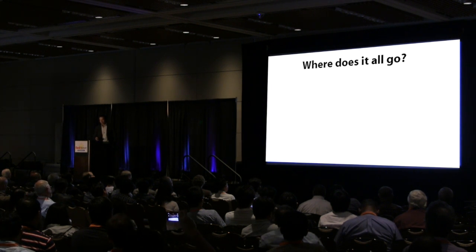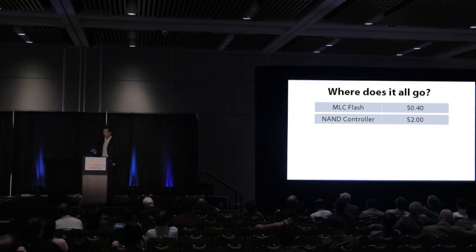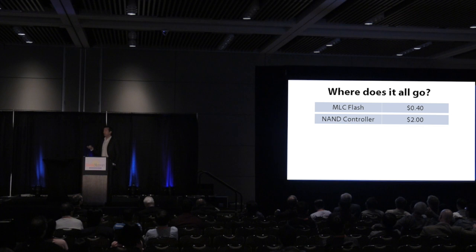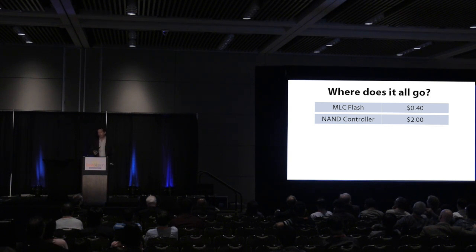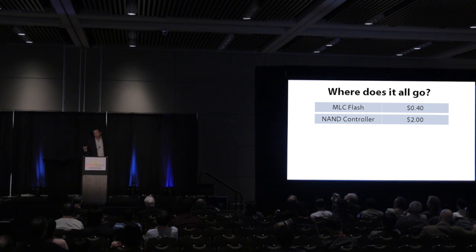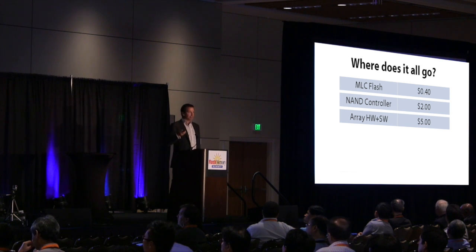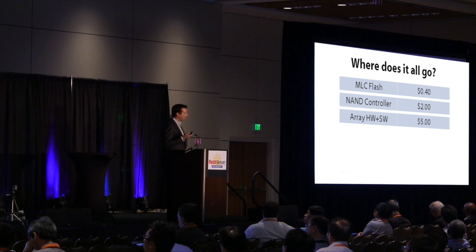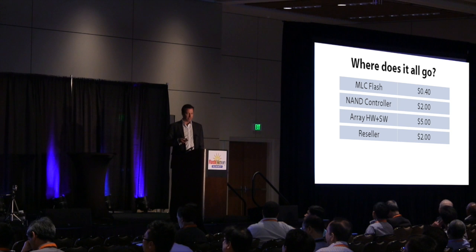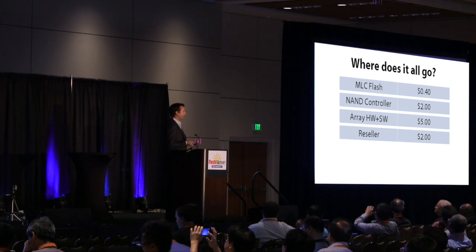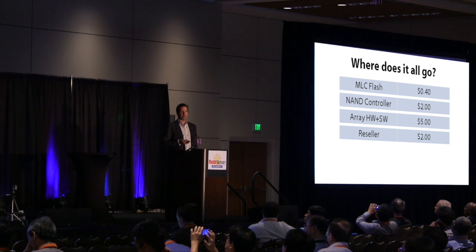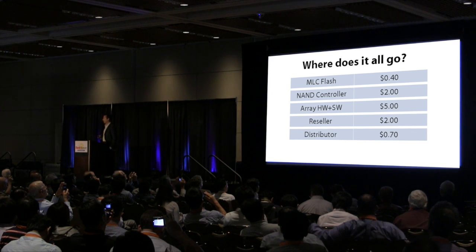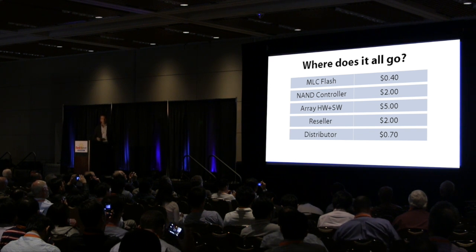Where does it all go? The NAND controller itself is generally commanding about $2 per gigabyte in the cost structure today. A NAND controller that is typically a $50 to $100 part is going to cost you about a 6X premium in a completed enterprise SSD. Then there's the array, the chassis, the system controllers, and the software licenses — that's about another $5 per gigabyte. If you're buying an enterprise array, 9 times out of 10 you're buying it through a reseller, who adds about $2 per gig. The distributor adds about $0.70 per gig, and the vendor's sales team costs are also embedded in what you pay.